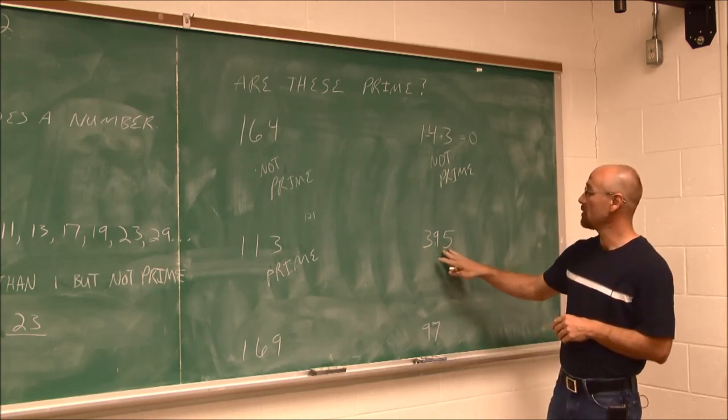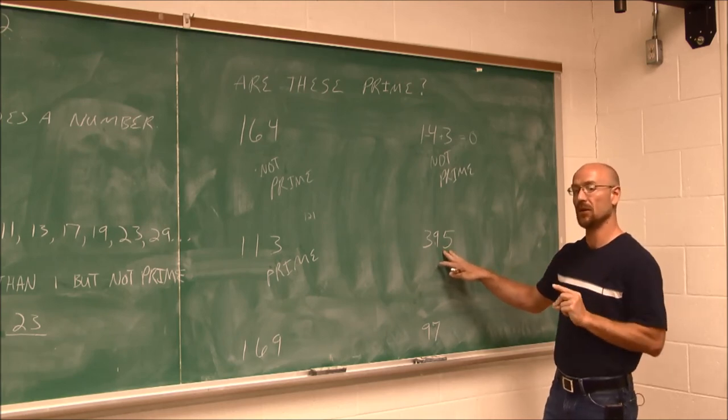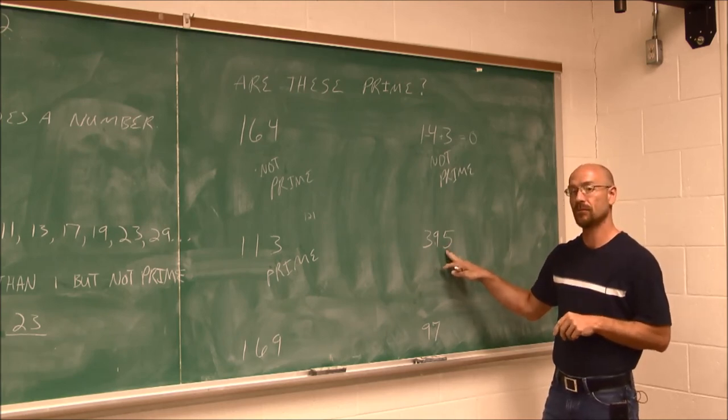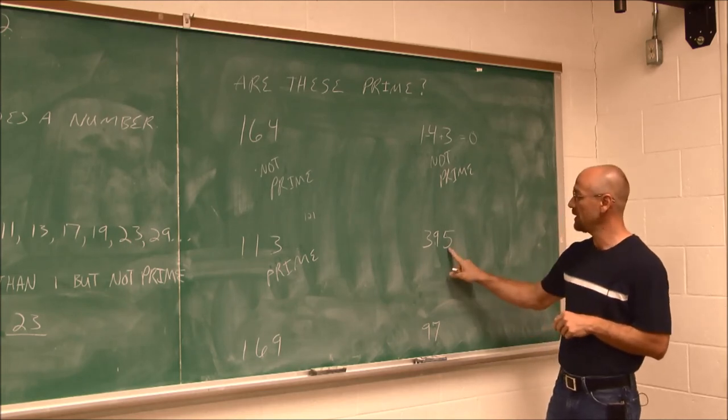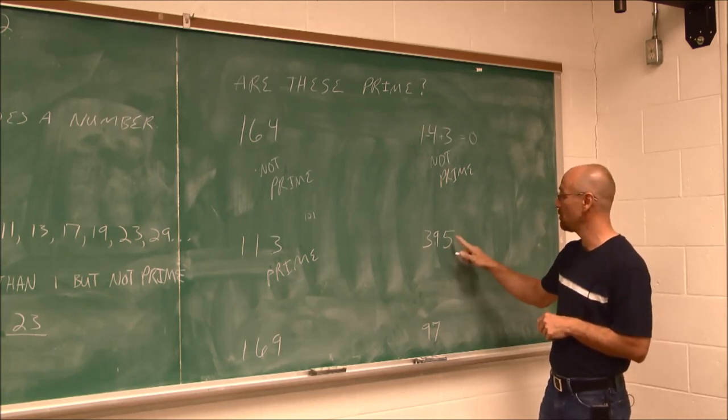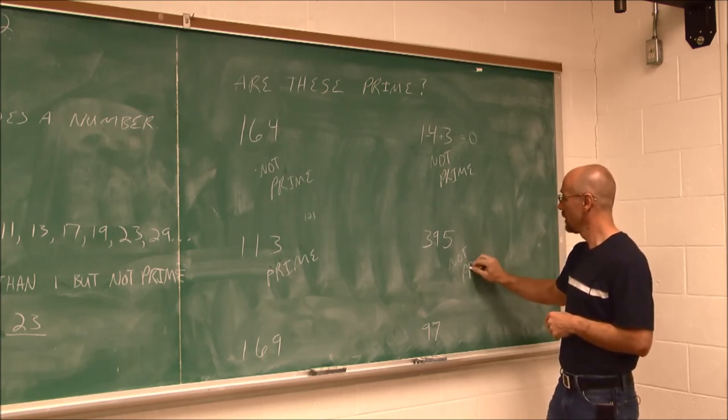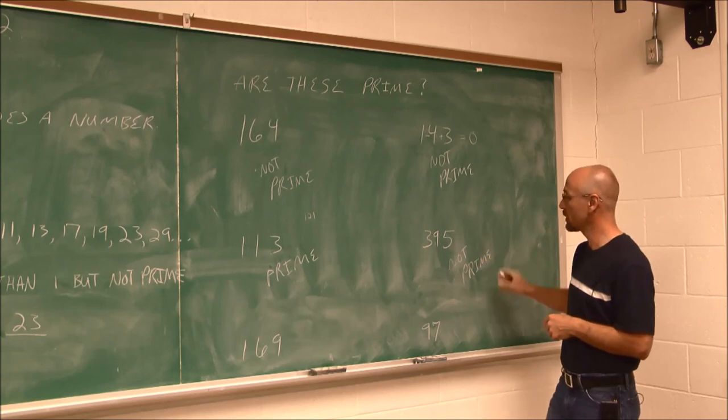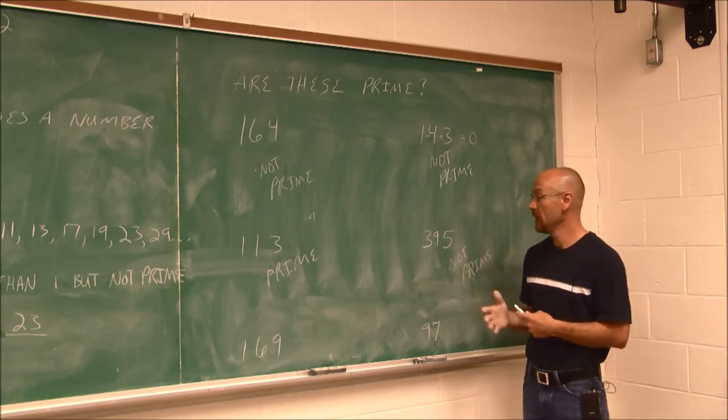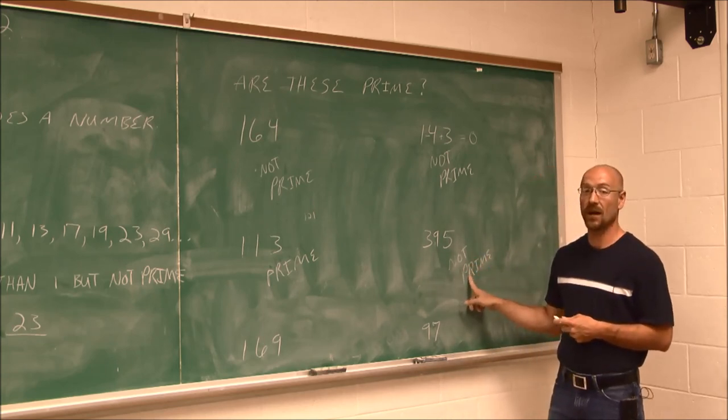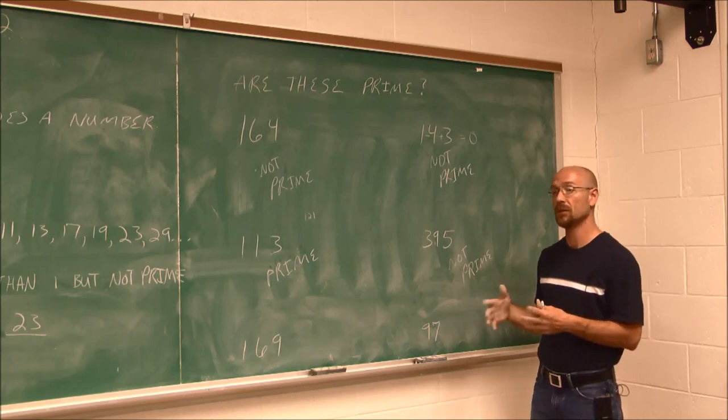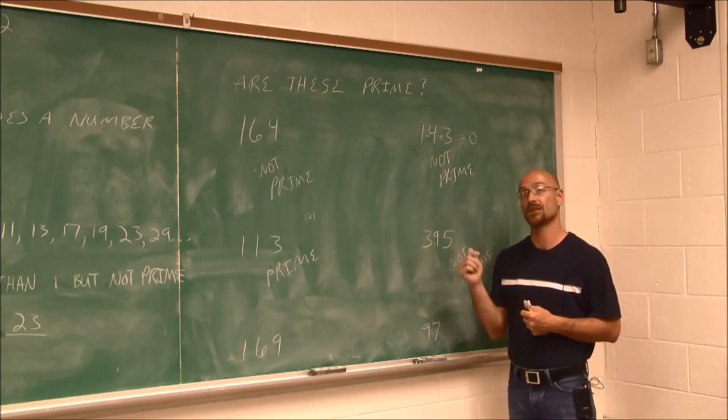And I look at this number. And I immediately know that this is not a prime number. And it's because I know my divisibility rules. I see it ends in a 5. It's divisible by 5. So this is not prime. As you work through the homework and you're asked to find prime numbers, you're going to see that it's not very often that you actually do find a prime number. There are more composite numbers than there are prime.